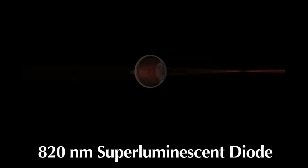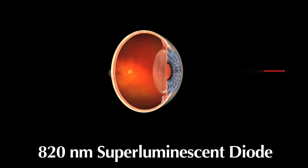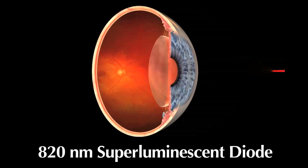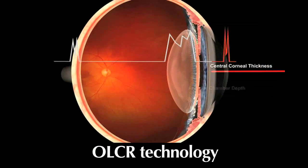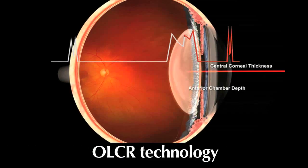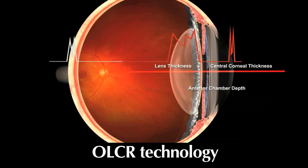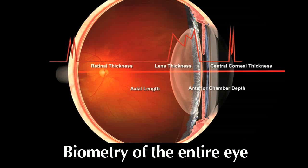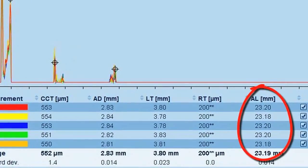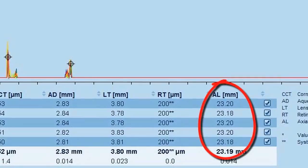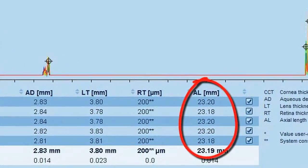LenStar utilizes an 820 nanometer advanced superluminescent diode combined with OLCR technology, which is similar to time-domain OCT. This provides precise axial length measurements and biometry of the entire eye.